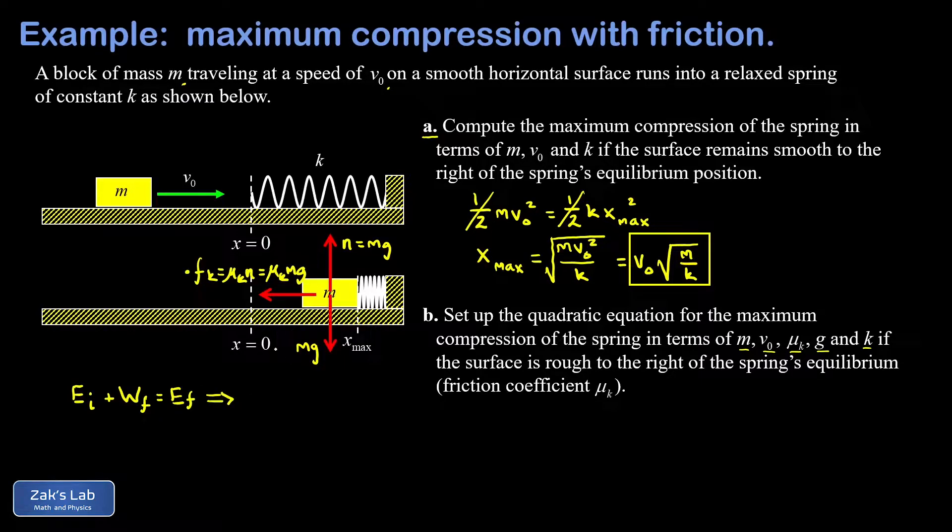So we plug in our initial energy, which in the initial state was all kinetic again, and that's one half m v0 squared. And then the work done by friction. Well, the block has traveled the distance of x max since it ran into that spring. And for that entire displacement, it experienced a force in the opposite direction of the displacement, giving me a negative work. And the magnitude of that force was μk m g. Again, the distance it acted through was x max. This is all equal to the energy in the final state, which is one half k x max squared.